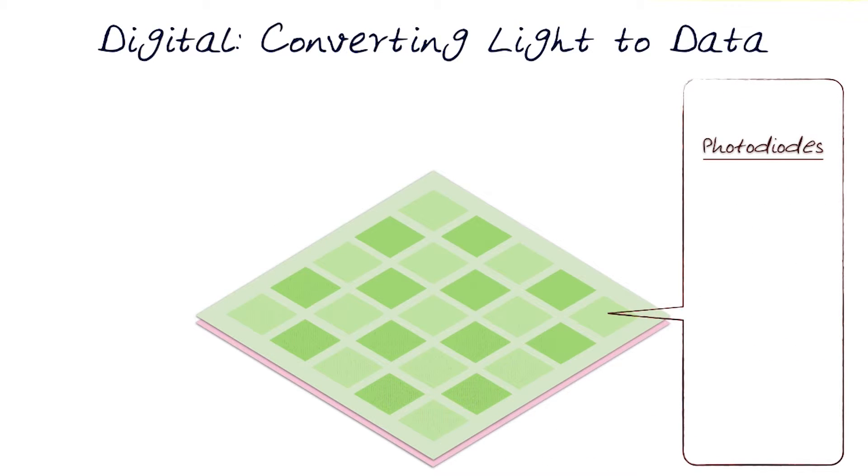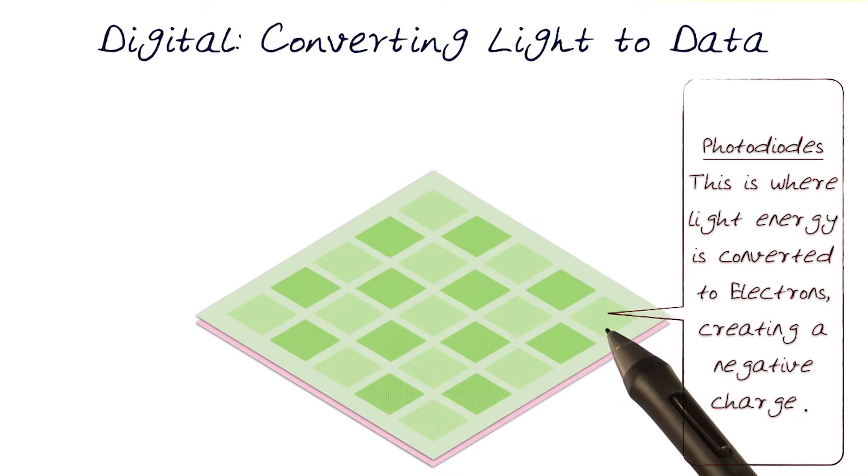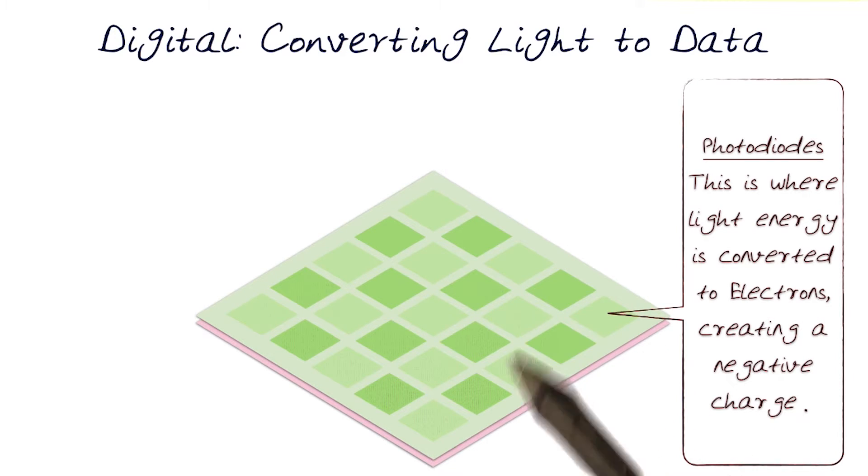So as noted, these are the photodiodes. This is exactly where the light energy that is hitting each one of these is converted to electrons and carries a strong negative charge.